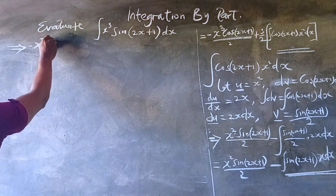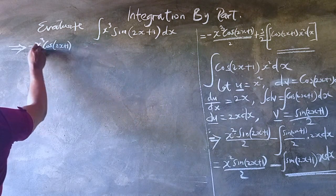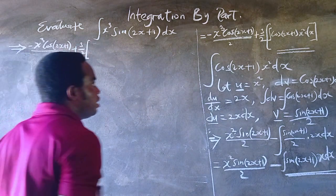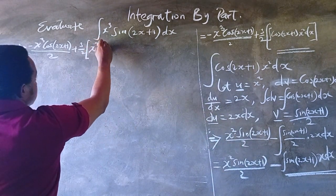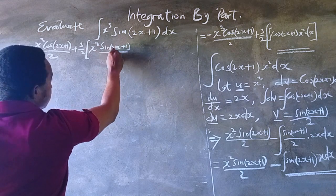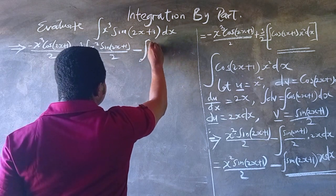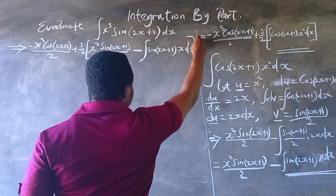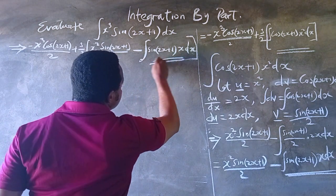What we have originally is negative x³ cos(2x+1) all over 2, plus 3 over 2 times the new result we obtained for the other integral — x² sin(2x+1) all over 2, minus the integral of sin(2x+1) times x dx. This is our new accumulated result, but as you can see, we still have an integral in our solution.